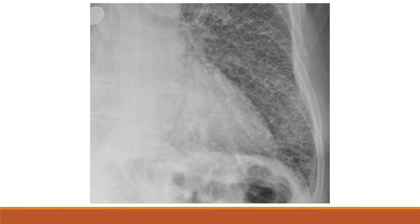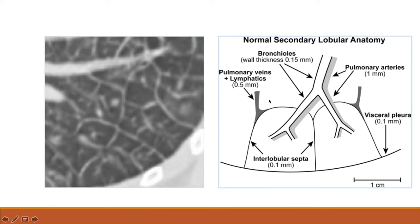If we take a CT of this same patient, you can see thickened lines at the periphery of the secondary pulmonary lobule — this is analogous to a Kerley B line on chest X-ray, but what you're seeing is interlobular septal thickening. We can also identify a vessel in the center of the secondary pulmonary lobule, which is the pulmonary artery, the pulmonary vein, and lymphatics at the periphery. The bronchus is not easily visible here because it's a little too small to recognize in this patient.